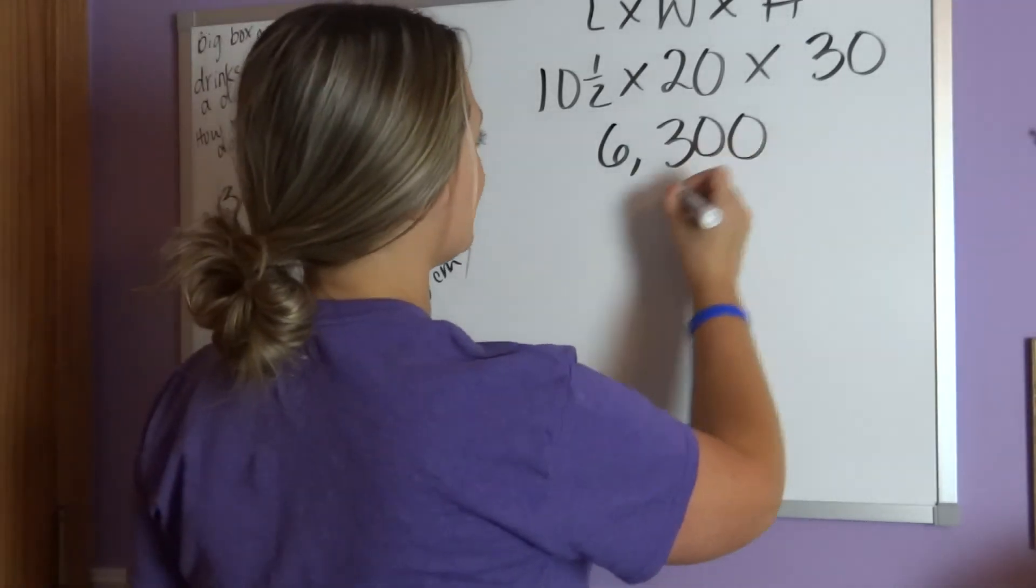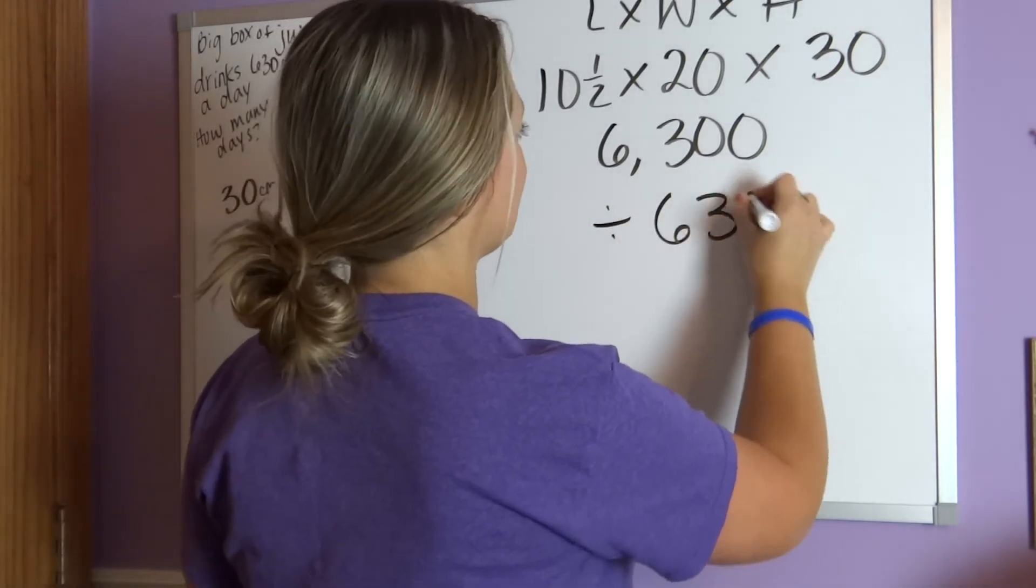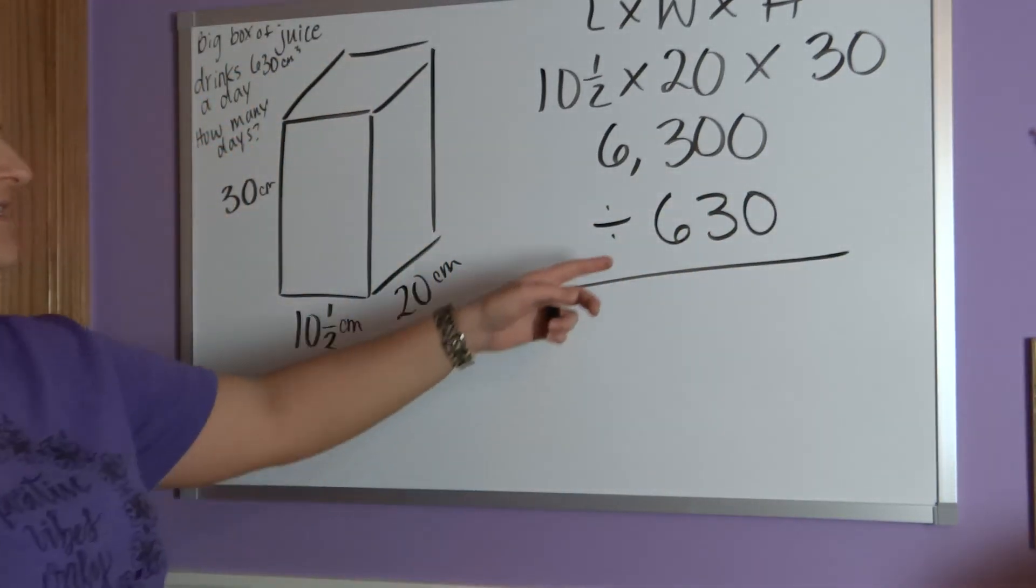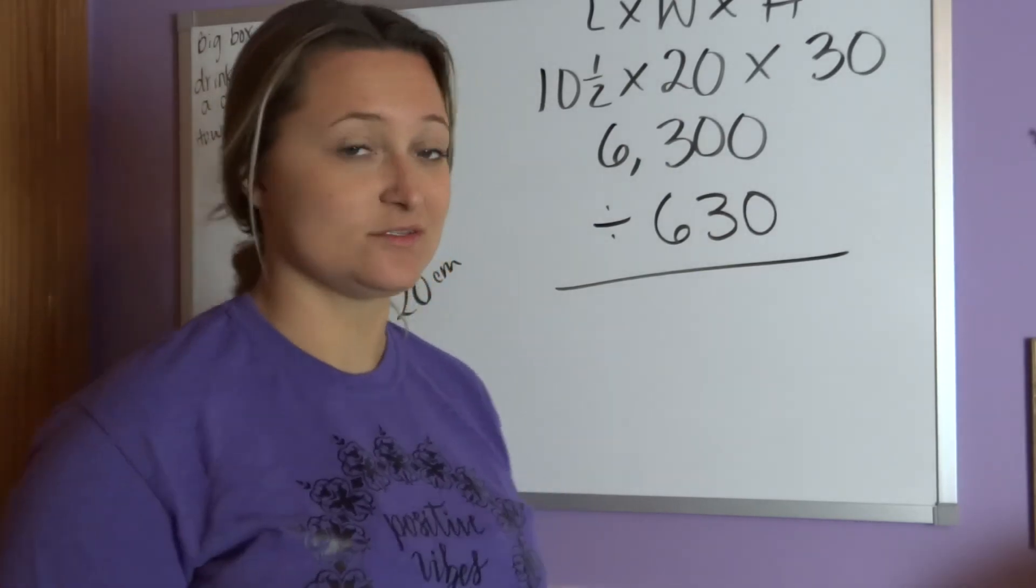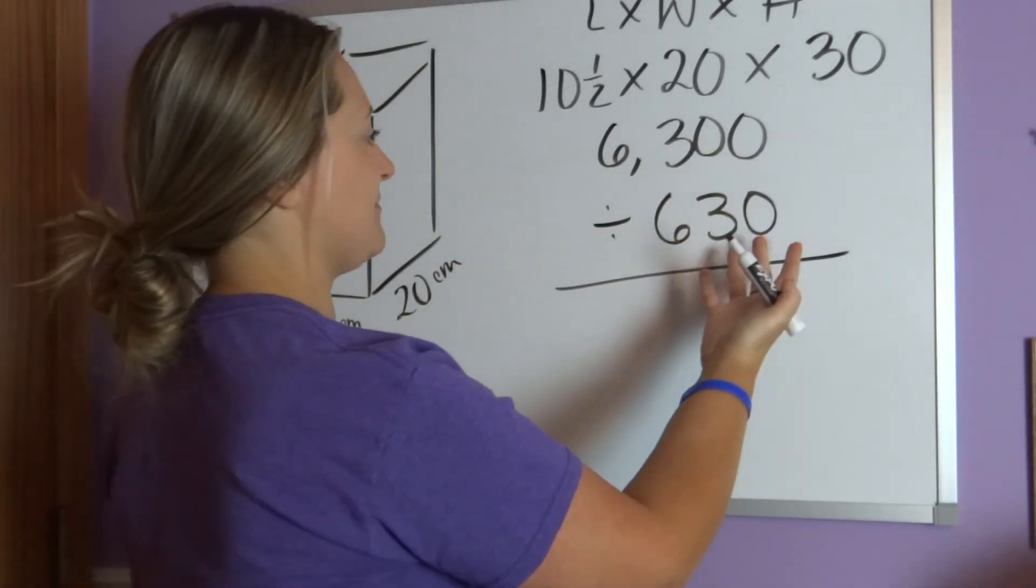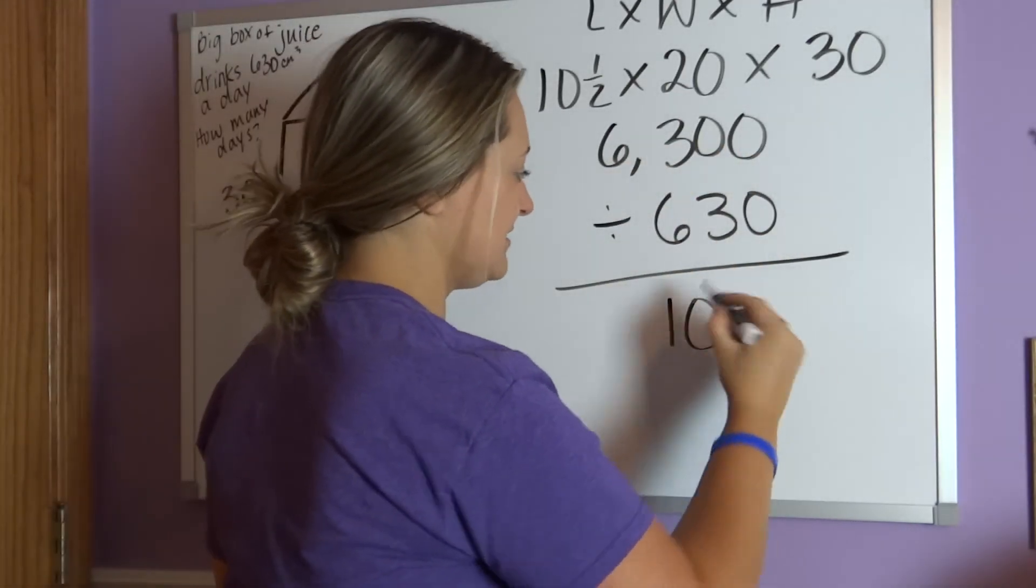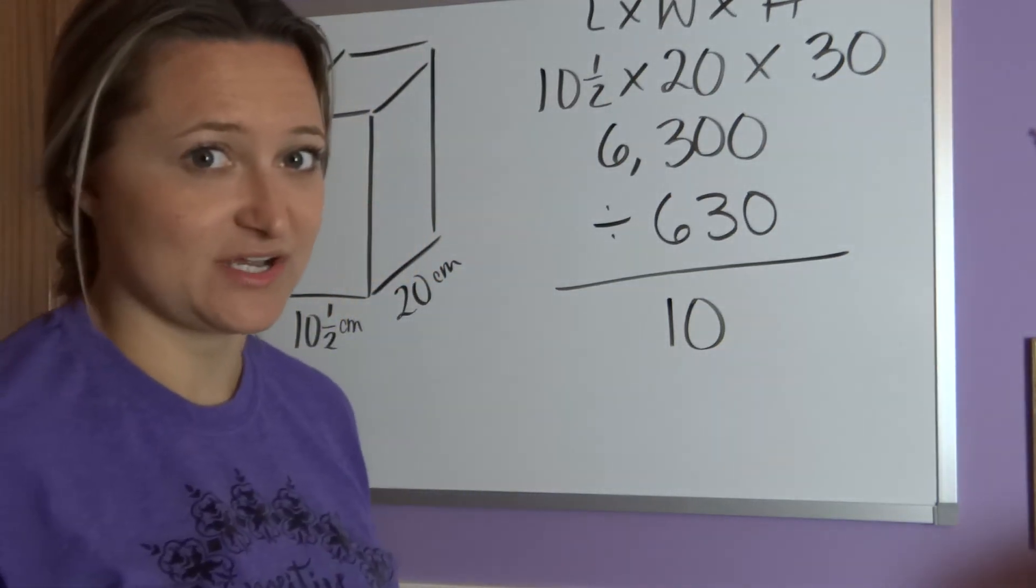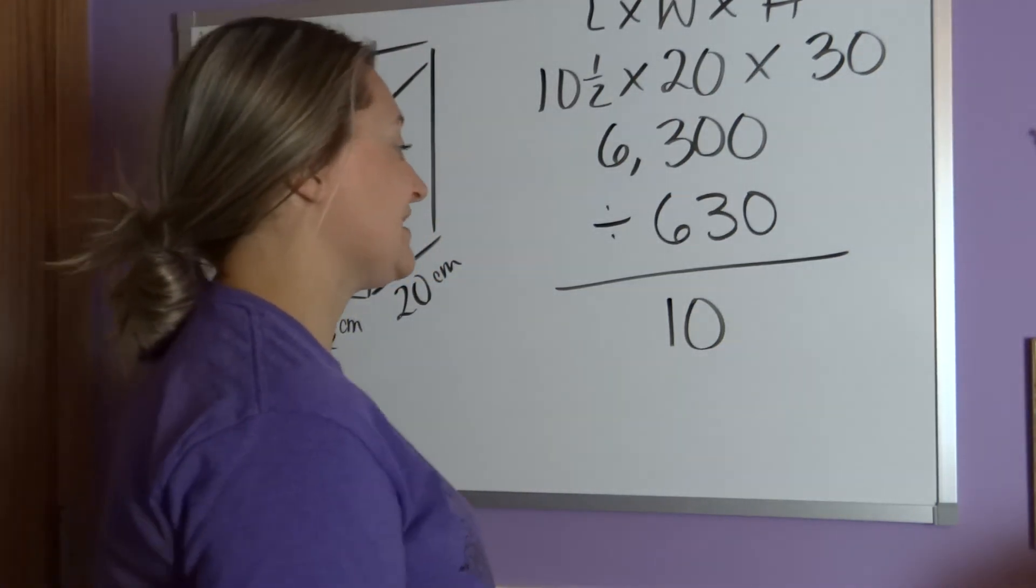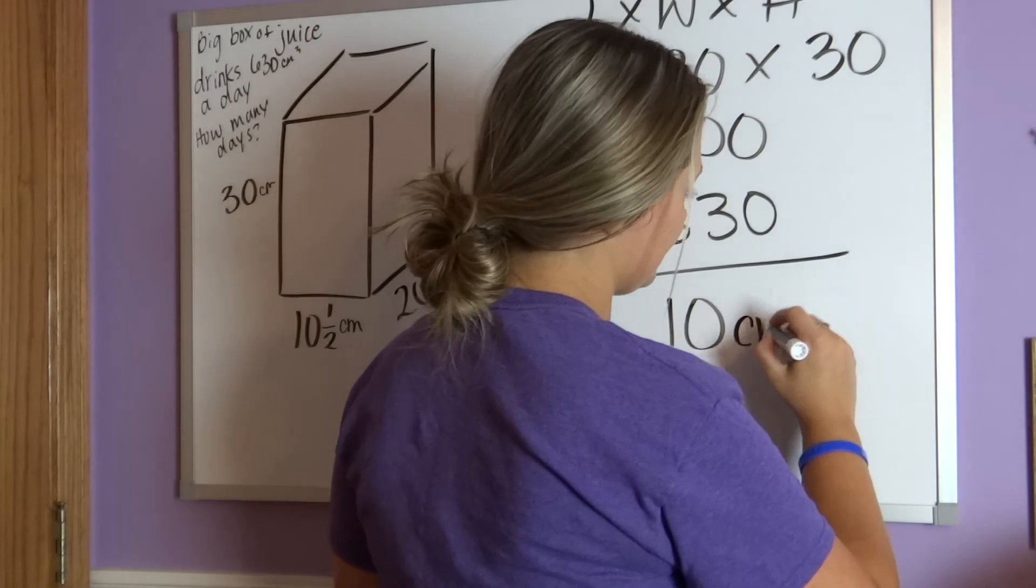So if we take this number now and divide it by 630, well, you'll notice that there's just one more zero on this one. So it looks like this number divided by that number would end up being 10, right? Or you could have double-checked it with a calculator. So our answer should be 10 centimeters cubed.